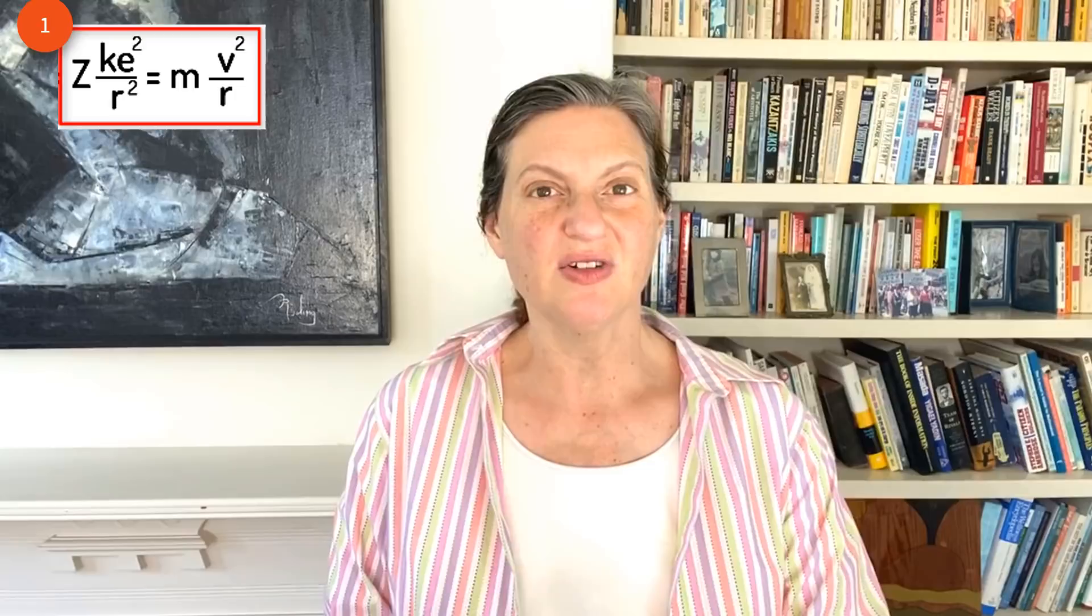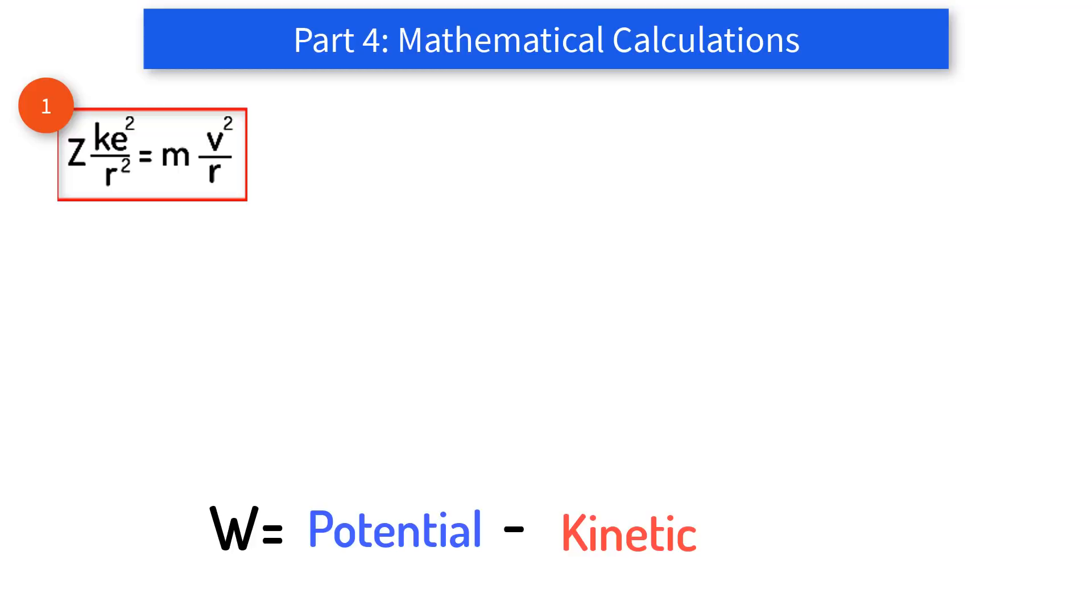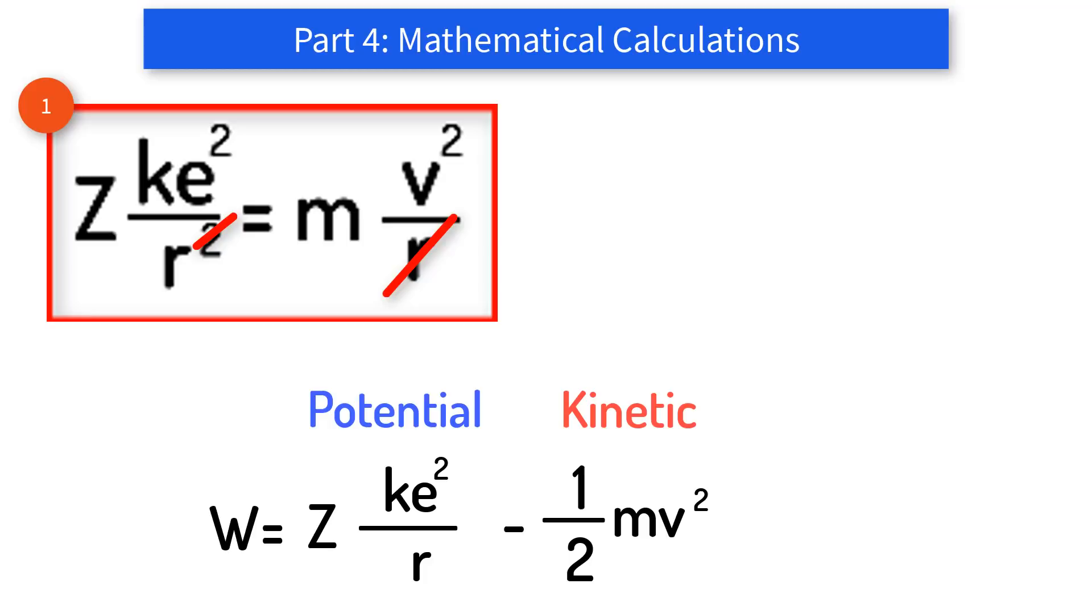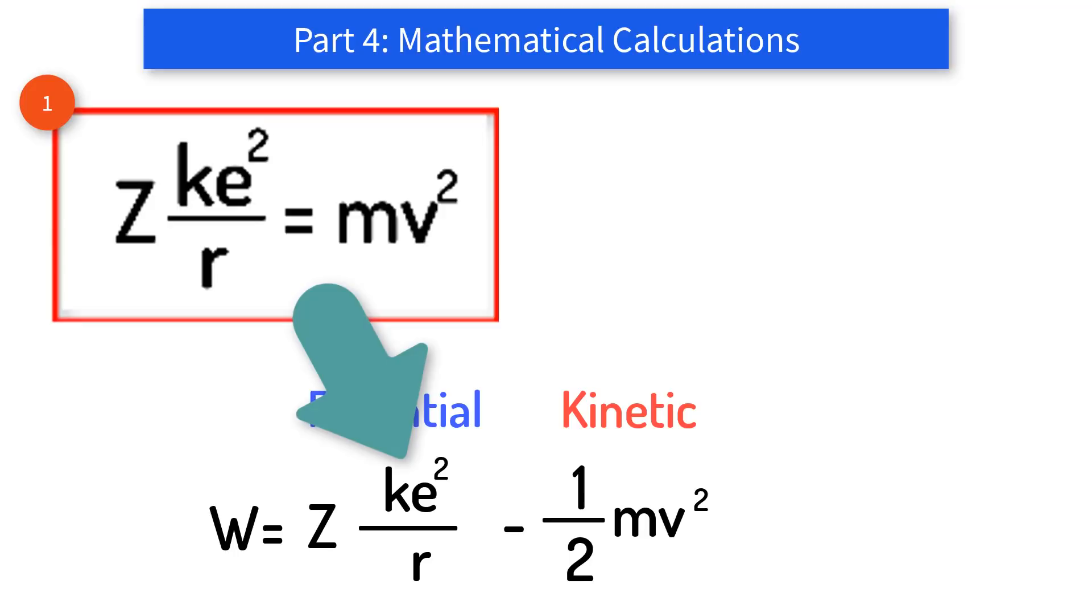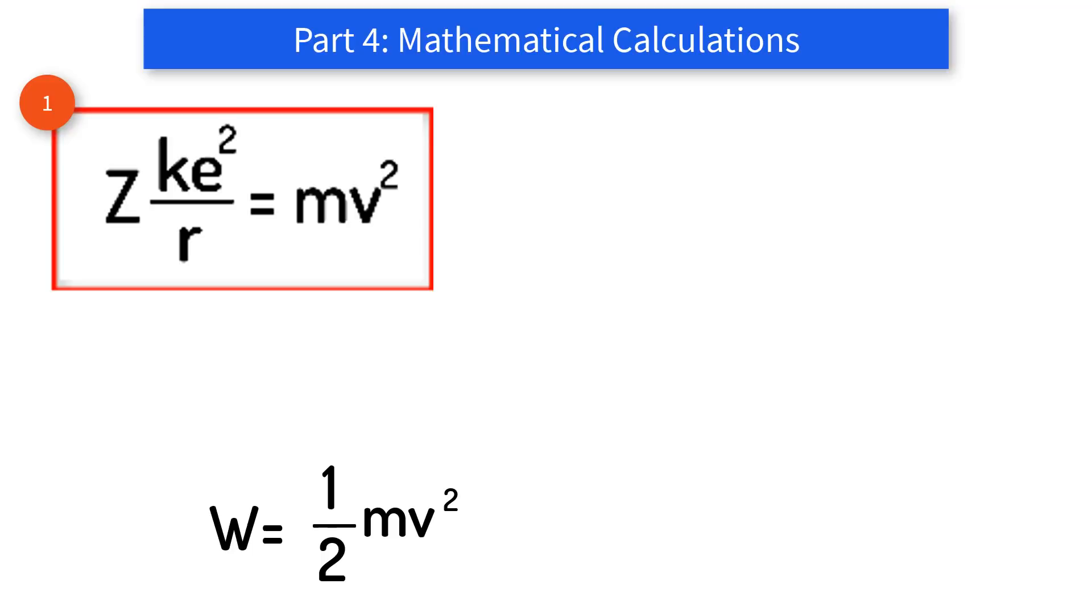The work needed to remove an electron from an atom, which we will label W, is the potential electrical energy holding the electron in the atom, which is Coulomb's constant times the two charges divided by the distance minus the electron's kinetic energy ½mv². If you multiply equation one by r, you get that Zke² over r equals mv², or that the potential energy equals twice the kinetic energy. Since ½mv² minus ½mv² equals ½mv², W can be reduced to be ½mv², which is the same as half the potential energy, or Zke² over 2r. Let's call this equation two. This is as far as you can get without quantum restrictions.